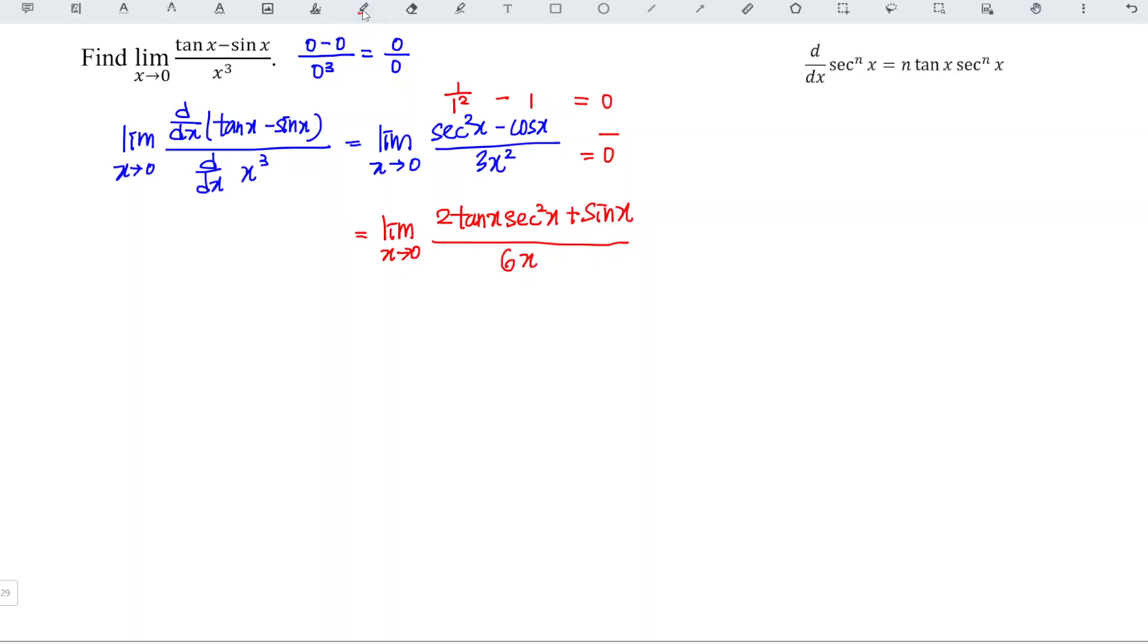Now we substitute 0. When we substitute 0 into tangent, we get 0. So 0 times anything is 0. This term is 0 plus sin(0) = 0 over 6(0) = 0. Again, this is an indeterminate form, so we have to differentiate again.